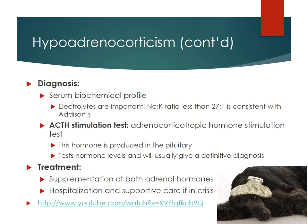To diagnose Addison's, we do blood work — electrolytes are very important. A sodium-to-potassium ratio less than 27:1 is consistent with Addison's. We also perform an ACTH stimulation test: adrenocorticotropic hormone, produced by the pituitary, normally tells the adrenal glands to produce steroids. We give synthetic ACTH — if the adrenal glands don't respond by producing steroids, we confirm hypoadrenocorticism. Hormone levels from this test usually give a definitive diagnosis. Treatment is supplementing adrenal hormones, plus hospitalization for supportive care during an Addisonian crisis.